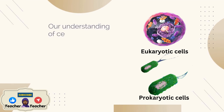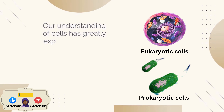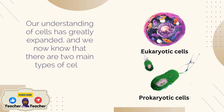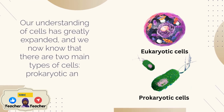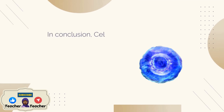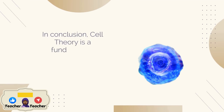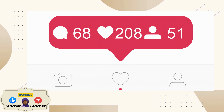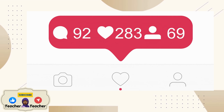Our understanding of cells has greatly expanded, and we now know that there are two main types of cells: prokaryotic and eukaryotic. In conclusion, cell theory is a fundamental concept in biology that explains the basic unit of life.